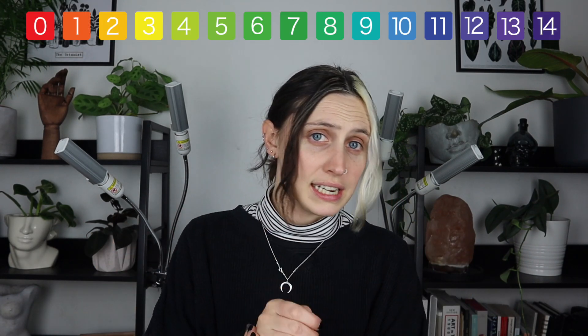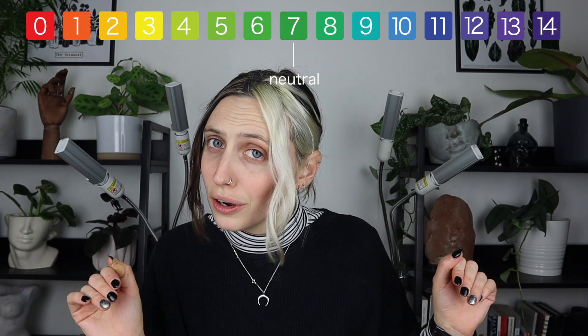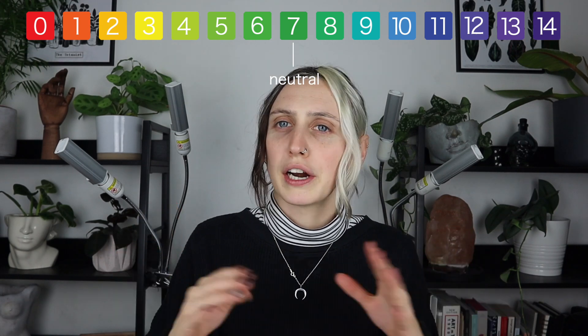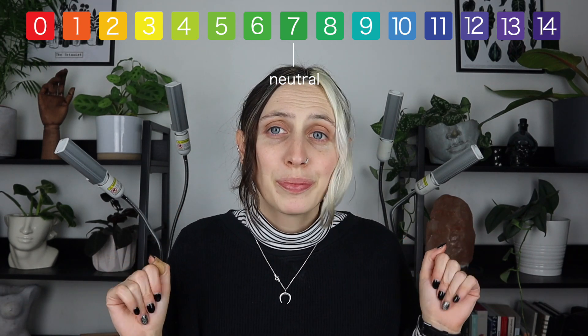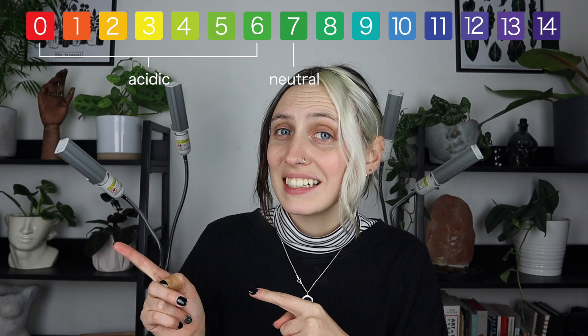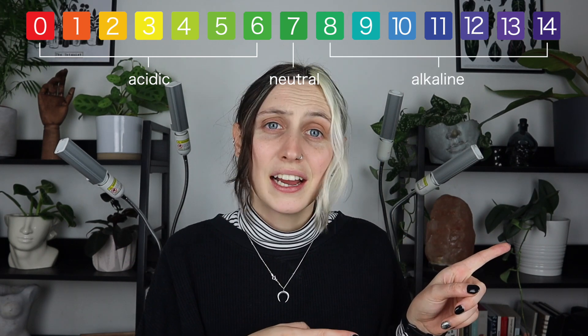First off, science lesson — what is pH? pH stands for potential hydrogen. The pH scale measures how many hydrogen or hydroxyl ions are within whatever you're testing, whether it be soil, water, or anything really. The scale goes from 0 to 14. pH 7 is neutral — that's the pH of water. Any pH less than 7 is acidic, and any pH more than 7 is alkaline.